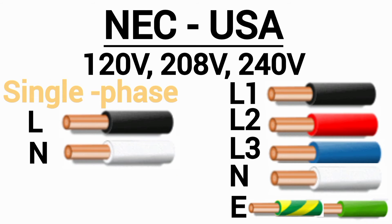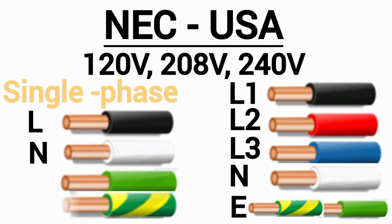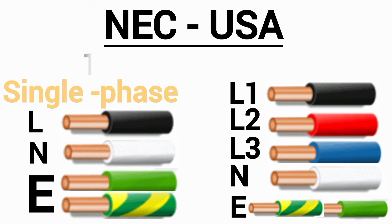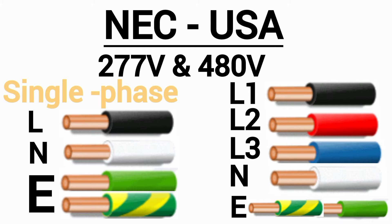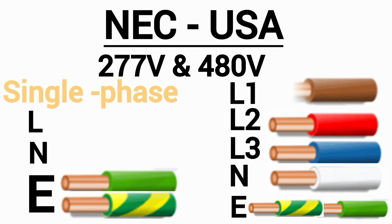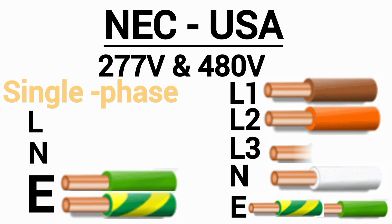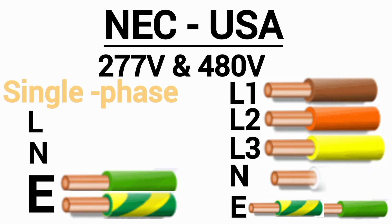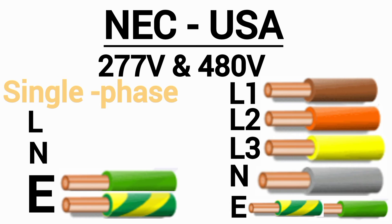For single-phase in this category, black is used for live, white for neutral, and either green or green with yellow stripes for ground or earth. For 277V and 480V three-phase systems, the colors used are brown for L1, orange for L2, yellow for L3, gray for neutral, and green or green with yellow stripes for ground or earth.